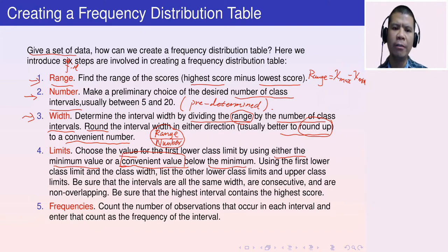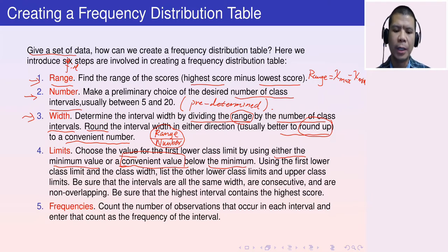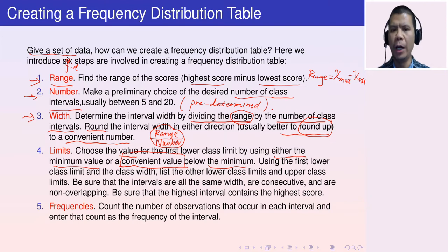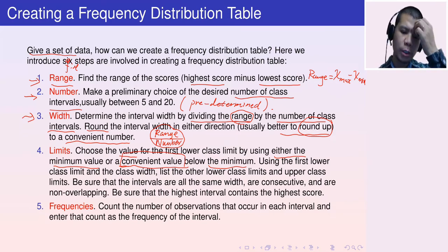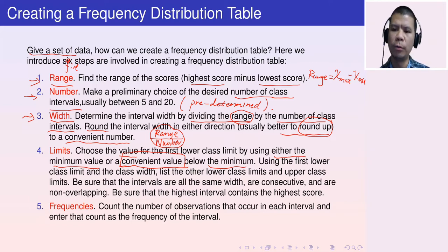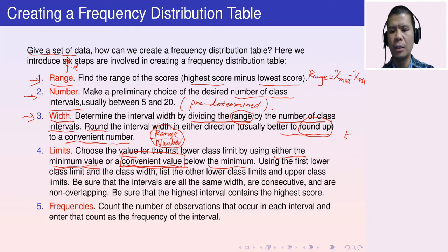The convenient value should be below the minimum but not too far away. The closeness is measured with respect to the width: the difference between the convenient number and the minimum value should be less than the class width. For example, if the width is 5, the difference between the convenient number and the minimum should be less than 5.